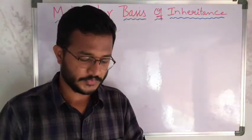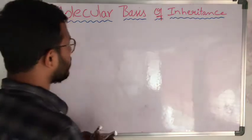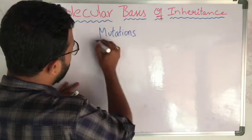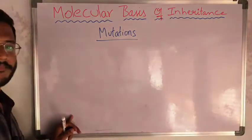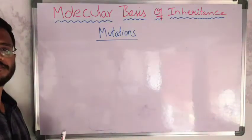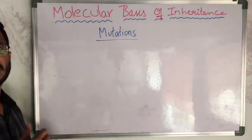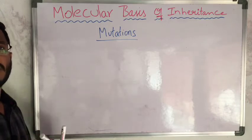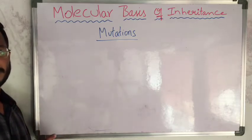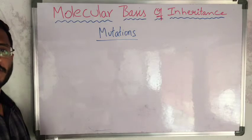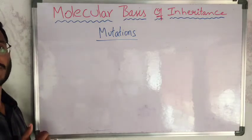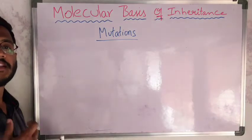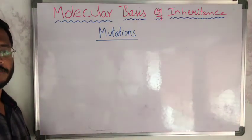Today in this class we need to know about mutations before going into translation. A mutation is a change at the DNA level or at the mRNA level. As a result, a new protein will be formed, or sometimes no protein will be formed at all. Sometimes poisonous or toxic proteins are formed, leading to expression of new characters, and sometimes it may also lead to lethality — the death of that organism.